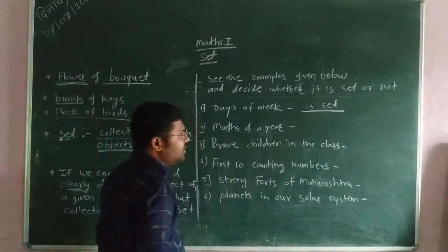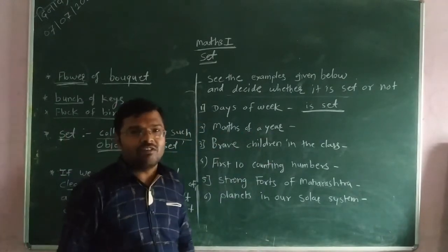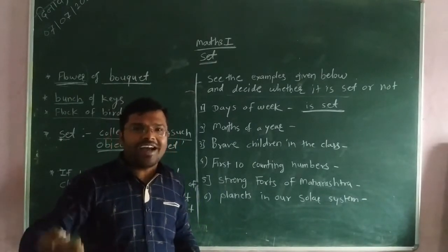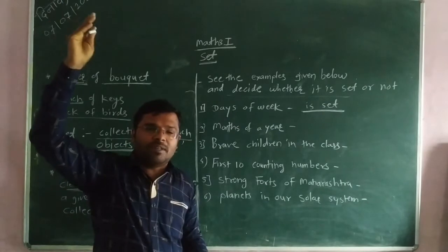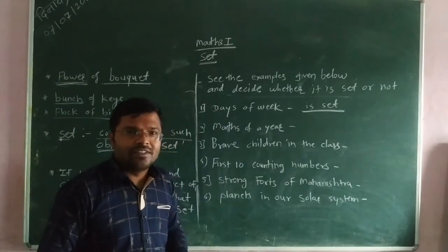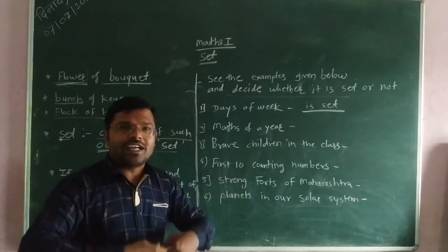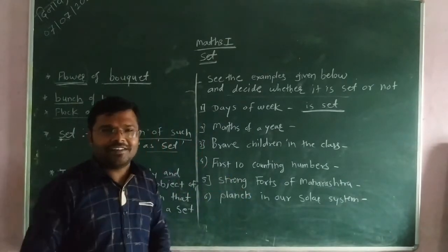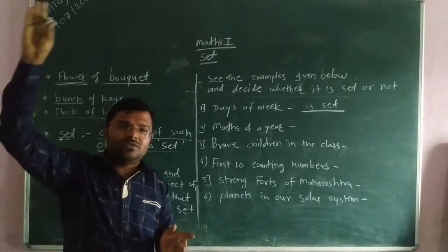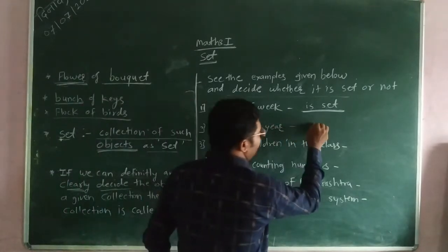Months of the year — is it changeable? No. January, February, March, April, May, June, July, August, September, October, November, December — they are fixed, starting from January through December. That means this is also a set.